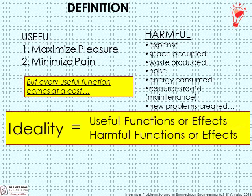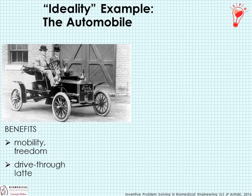The definition of Ideality is basically the ratio of useful functions or effects to harmful functions or effects — also known in the business world as the cost-benefit ratio. Take the automobile, one of the greatest inventions of the modern era that has undeniably shaped modern society. It has brought us many benefits, but they've come at a cost.